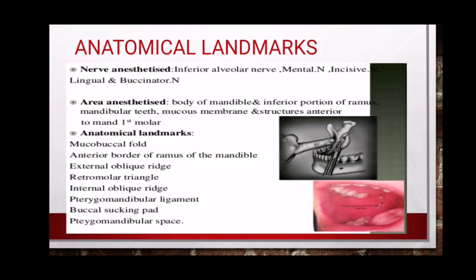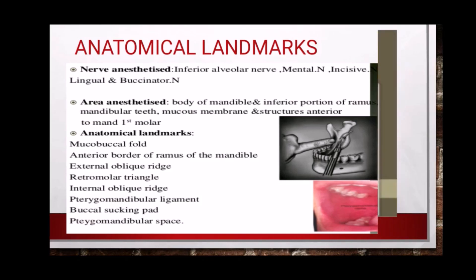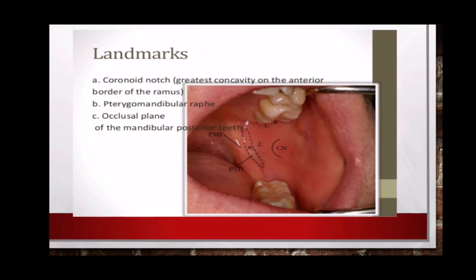The anatomical landmarks are the muco-buccal fold, anterior border of the ramus of the mandible, external oblique ridge, retromolar triangle, internal oblique ridge, pterygomandibular ligament, buccal sucking pad, and pterygomandibular space. As you can see in the diagram, the key landmarks include the coronoid notch, the pterygomandibular raphe, and the occlusal plane of the mandibular posterior teeth.